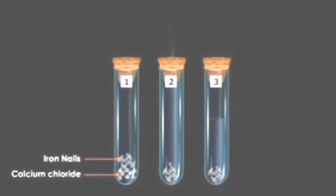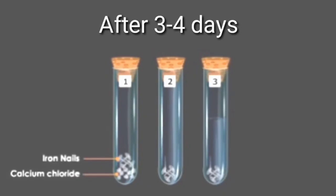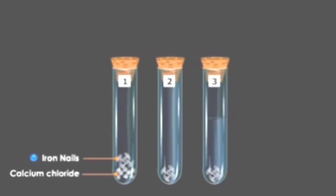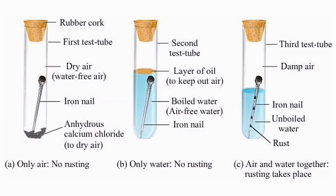After 3 to 4 days, the nails are taken out and examined carefully. In the first and the second test tube, there is no change — that is, there is no rust. But in the third test tube, the nails are being rusted.